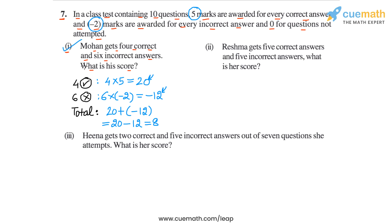In part 2, the problem statement says Reshma gets 5 correct answers and 5 incorrect answers. What is her score? Let's do it just like we did part 1. For Reshma's 5 correct answers, her score will be 5 into 5 marks per correct answer, so 5 into 5, or 25.